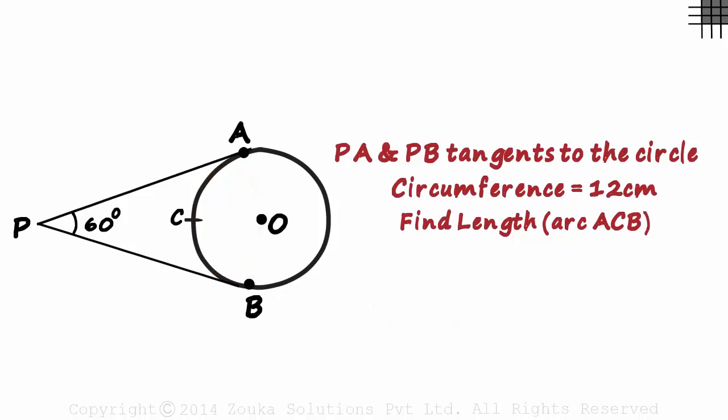So if we draw radii OA and OB, we get angle AOB as the central angle of this arc. But we need the measure of this angle and we haven't been given that. Can we find that though?